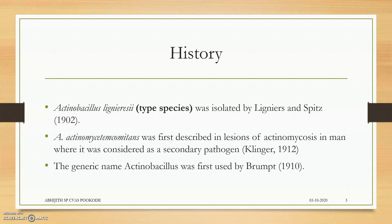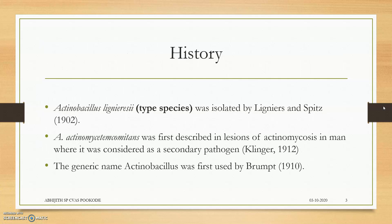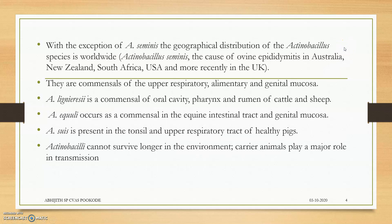Moving to the history of the bacteria: Actinobacillus lignieres is a type species in the Actinobacillus genus. It was isolated by Lignieres, and the species name was given from the name of the scientist — Lignieres. The generic name Actinobacillus was first used by the scientist Brown. With the exception of Actinobacillus seminus, the geographical distribution of Actinobacillus species is worldwide — that is, almost every area they are causing many infections.